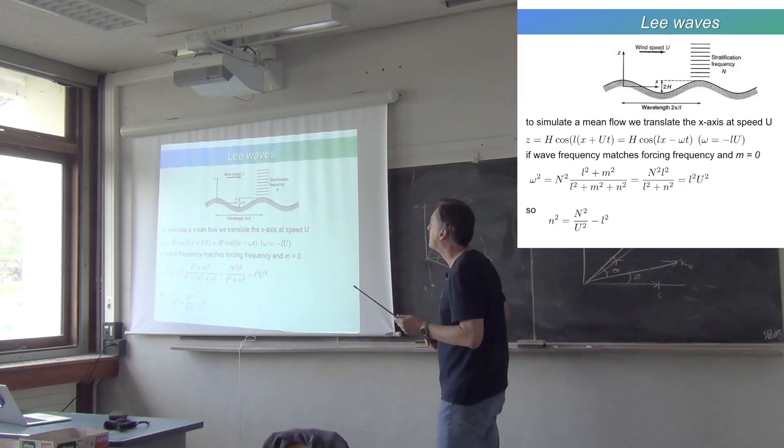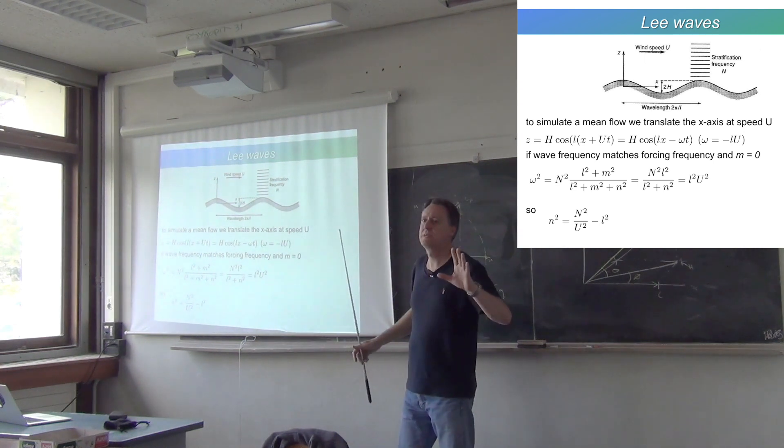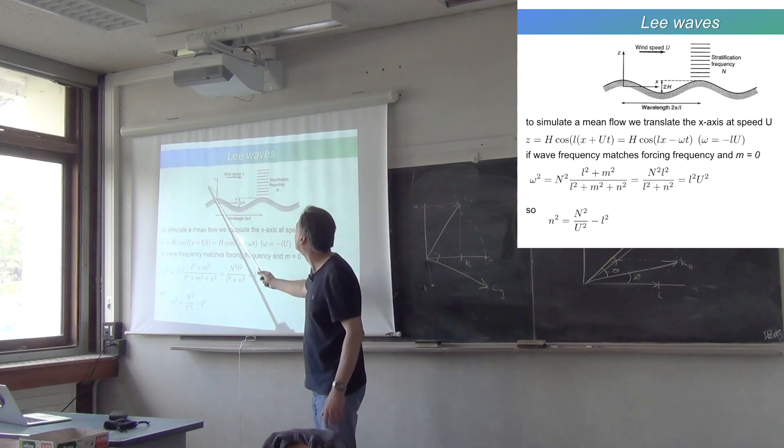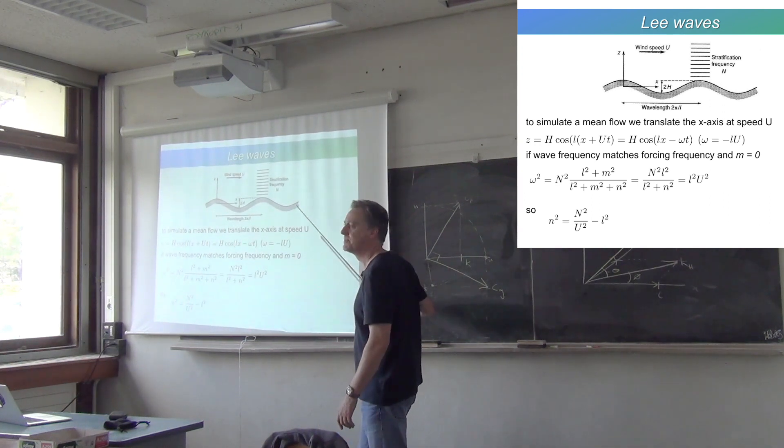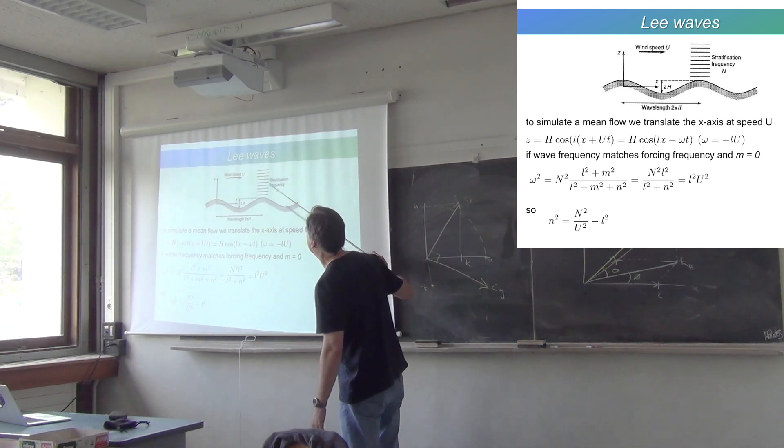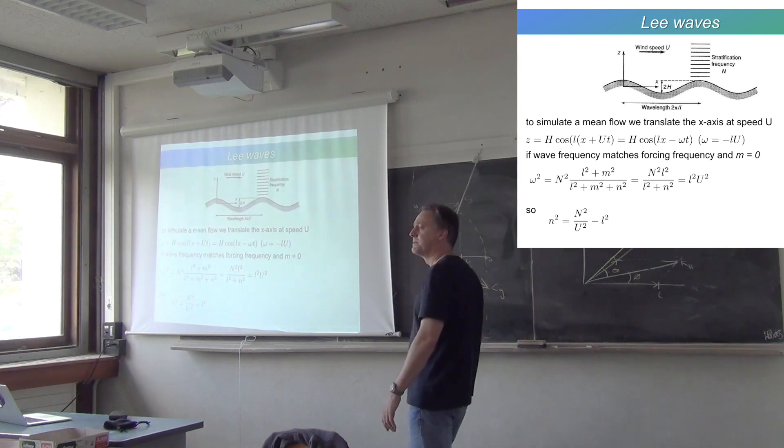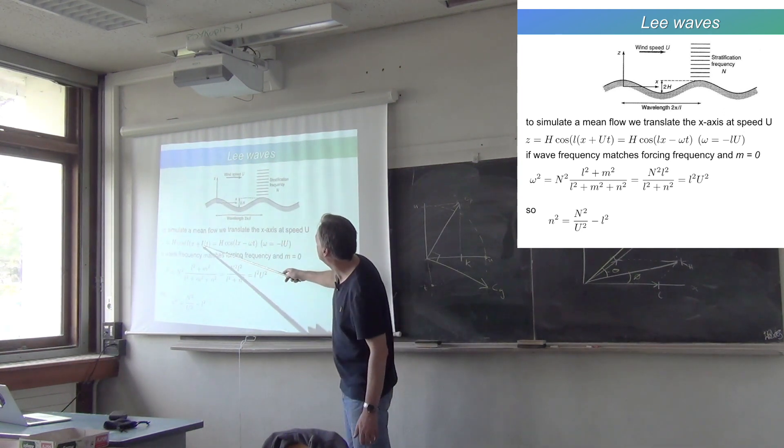Here's another example of internal waves generated at the bottom of the ocean or at the surface of the earth in the atmosphere. Let's say we have a flow at a certain speed across some regular topography with an amplitude H and a stratification N.